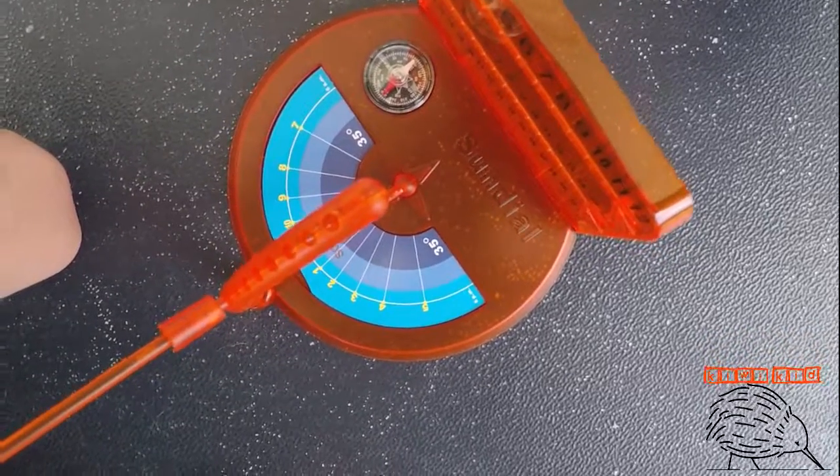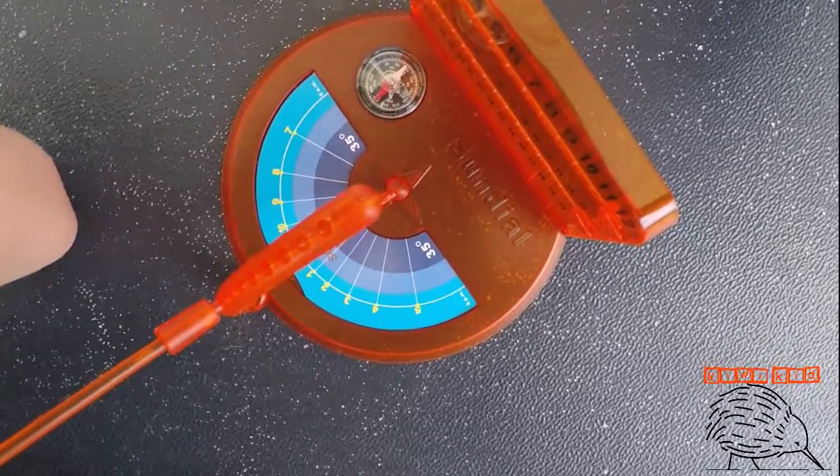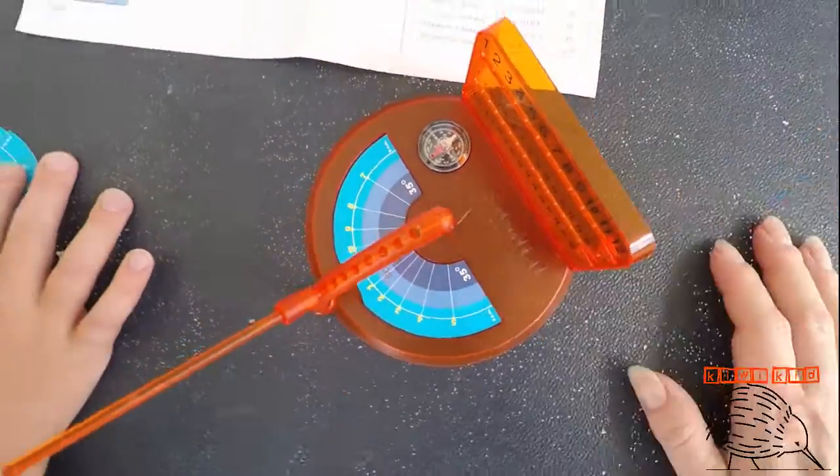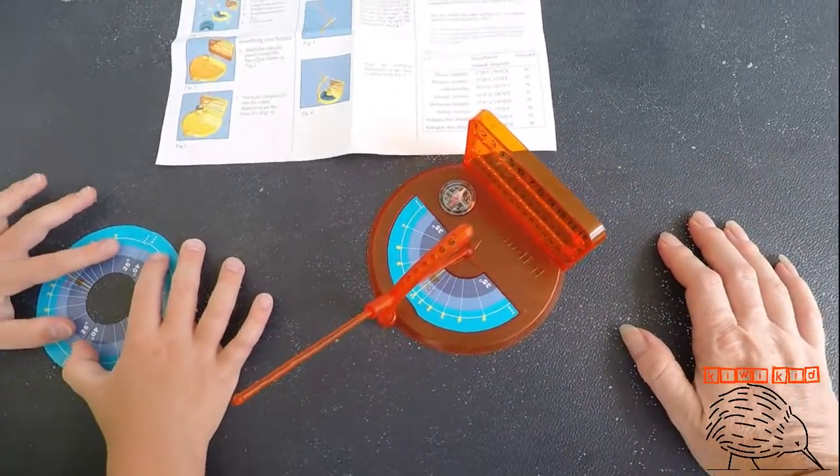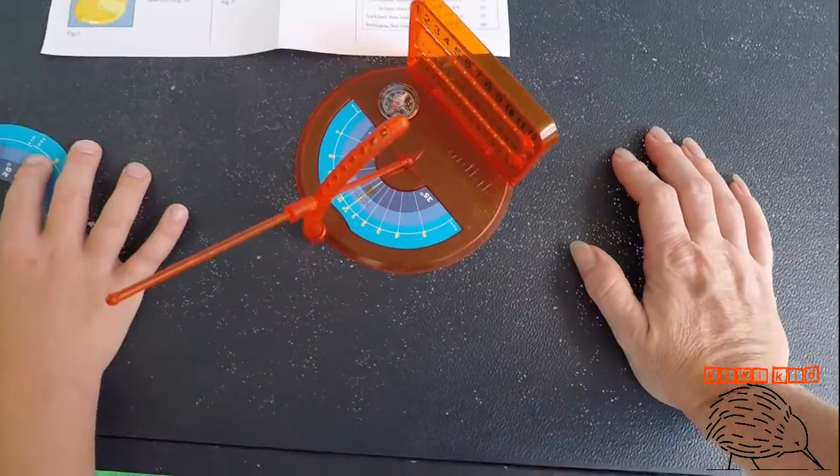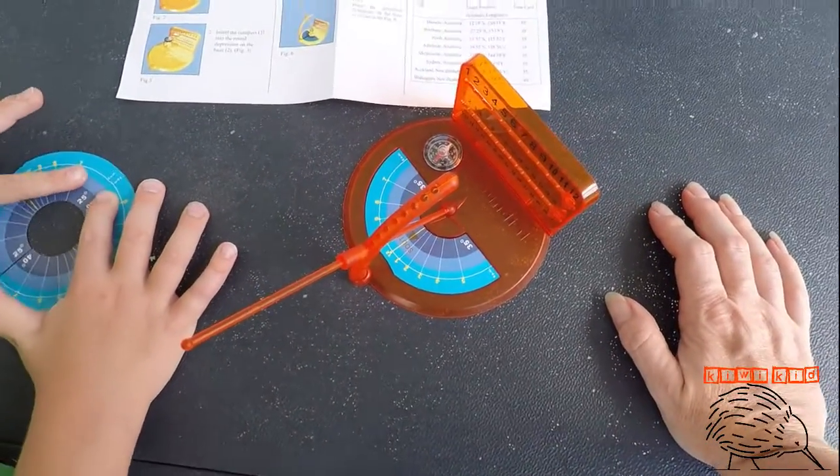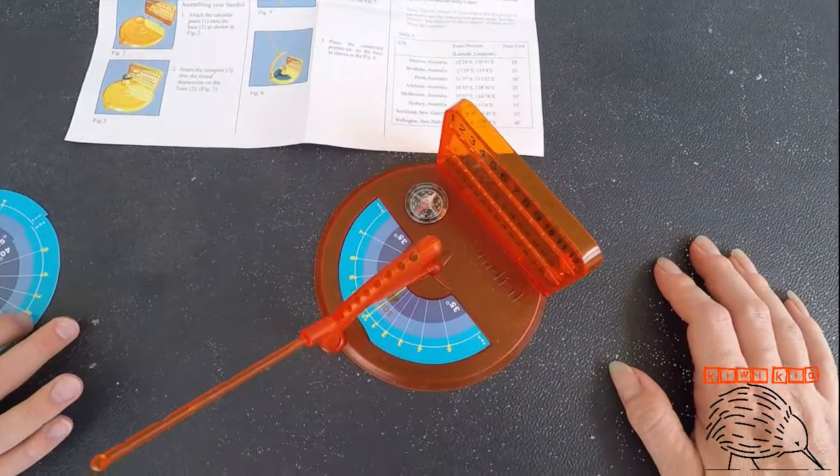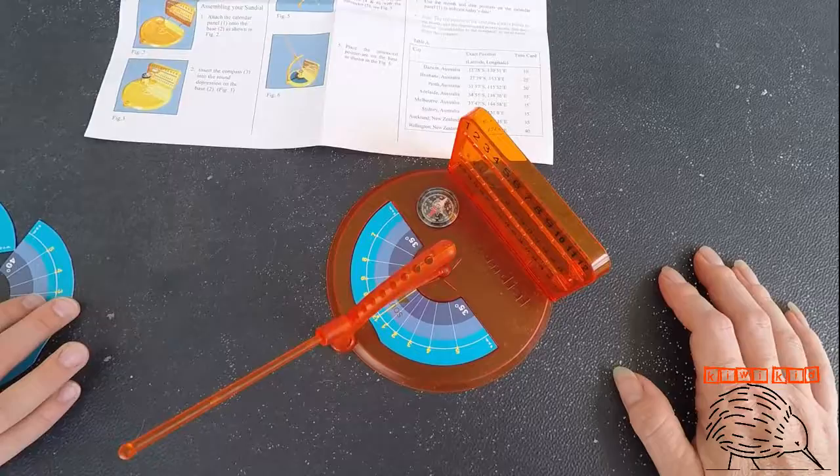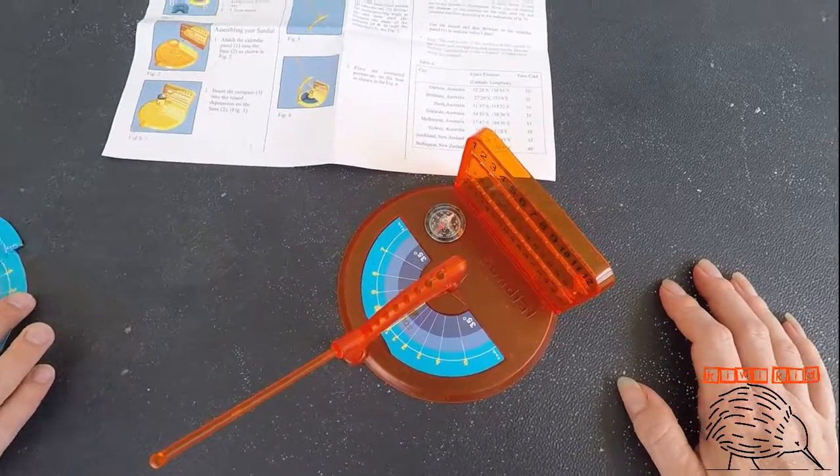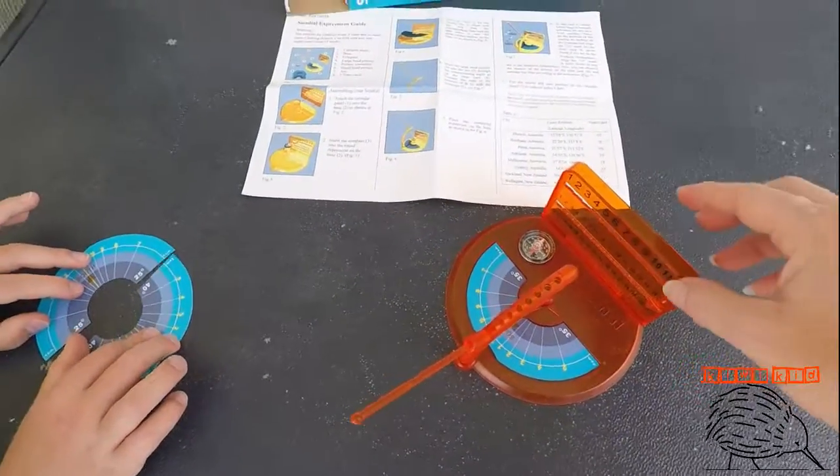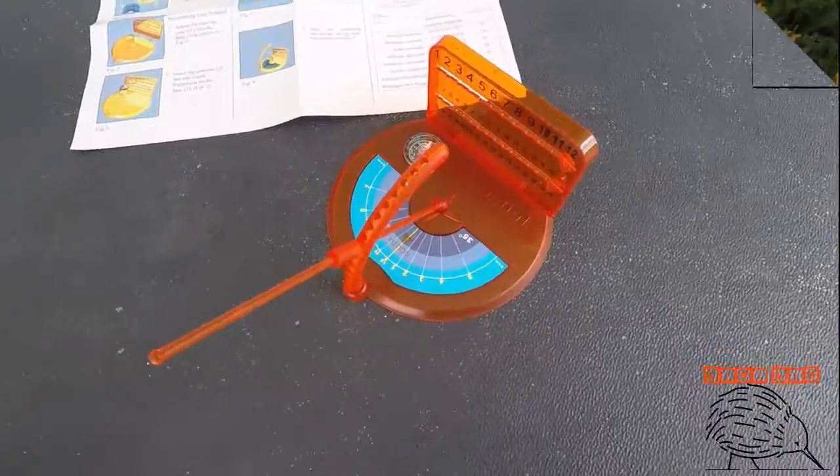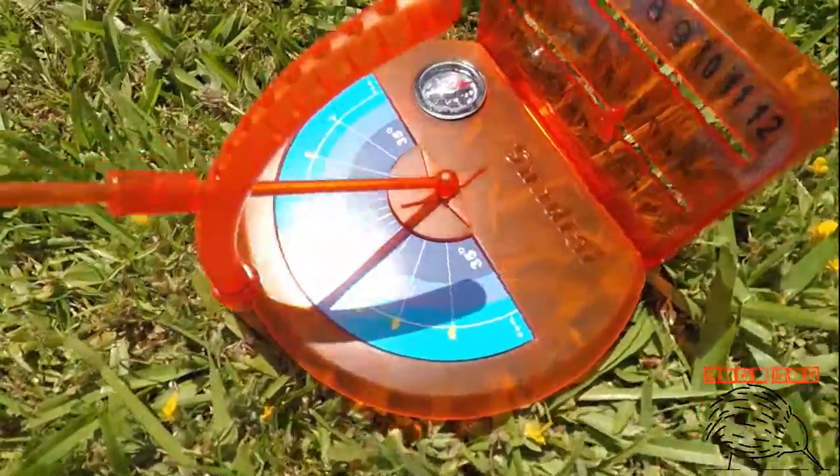To use it, take it outside where the sunlight is and place the unit on a level surface. Then fix the position of the sundial by looking at the compass and align the 12 mark on the time card to point north if you're in the northern hemisphere. Do you know which hemisphere we're in? South, that's right. We're in the southern one, so align the number 12 mark to the south point.